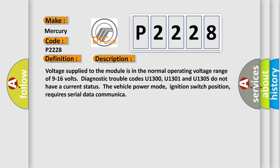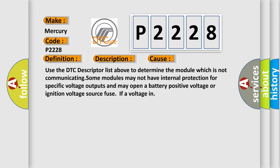This diagnostic error occurs most often in these cases. Use the DTC descriptor list above to determine the module which is not communicating. Some modules may not have internal protection for specific voltage outputs and may open a battery positive voltage or ignition voltage source fuse if a voltage input occurs.